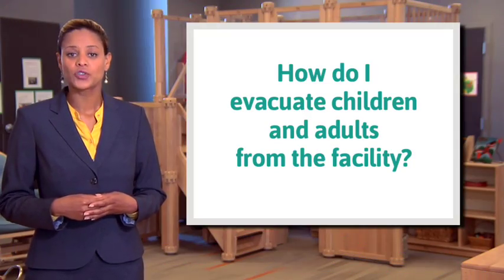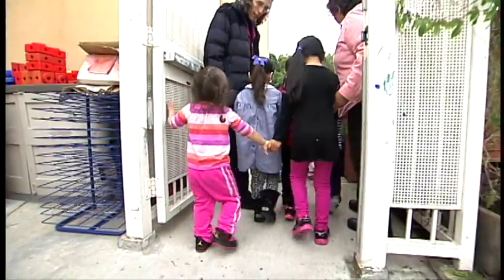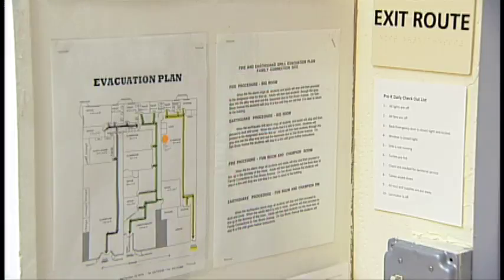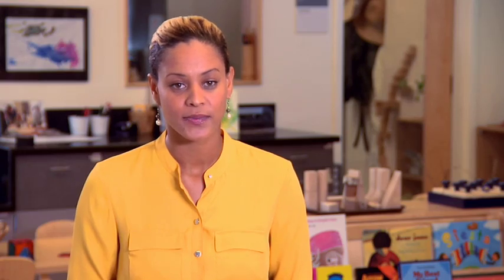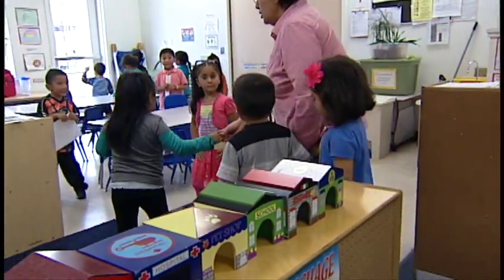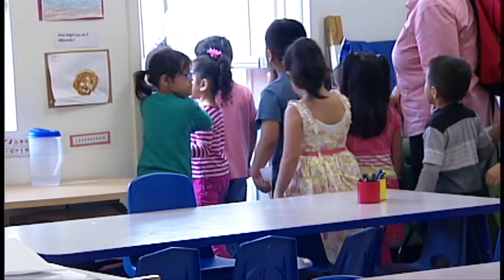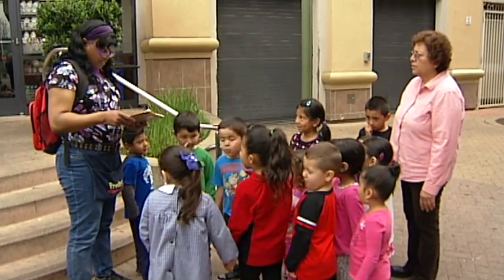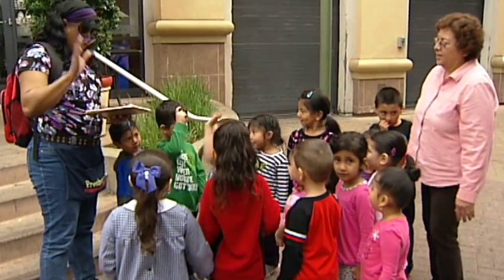How do I evacuate children and adults from the facility? Evacuation means everyone leaves the building. There are no exceptions, so your evacuation plan must provide for everyone, including infants who can't yet walk and children with special needs. Your evacuation plan will include marked exits and may include fire escapes. Everyone — adults as well as children who are old enough — should know how to proceed to and out of these exits. It is best practice for the safety of the children in your care to do roll call.